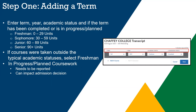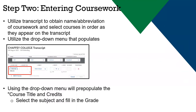If you are still attending the college or university, please enter in progress or planned for the completion status. When entering a course, it is important to utilize the drop-down menu when possible when entering the course code. You should be using your unofficial transcript and entering the course code as it appears on your transcript. Using the drop-down selection ensures that the course attributes such as credits, course title, and transferability update correctly. You will need to fill in the subject and grade.